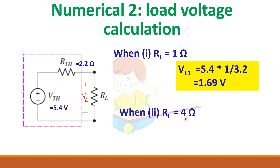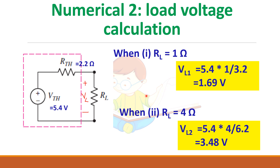When the load resistance is changed to 4 ohms, same formula: 5.4 volts total into 4 ohms divided by total resistance 6.2 ohms — so voltage has increased to 3.48 volts. Any complex network, when converted into a Thevenin equivalent circuit, as the load changes it is very easy to calculate the load current or load voltage.